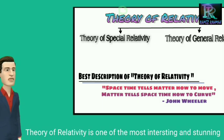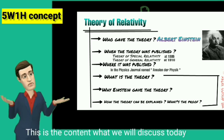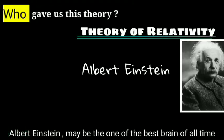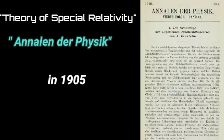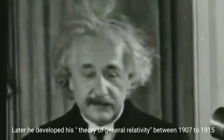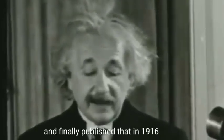The theory of relativity is one of the most interesting and stunning theories in the history of physics. Albert Einstein, maybe one of the best minds of all time, gave us this interesting theory. He published his theory of special relativity in 1905 in the physics journal Annalen der Physik. Later he developed his theory of general relativity between 1907 to 1915 and finally published it in 1916.